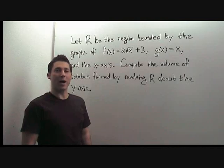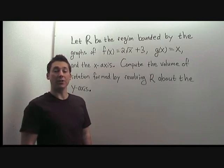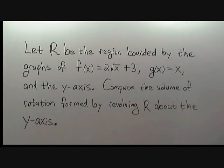This problem is about computing volumes of rotation. Although it's not mandatory, this problem lends itself very well to the cylindrical shell method. Let R be the region bounded by the graphs of f(x) = 2√(x+3), g(x) = x, and the y-axis. Compute the volume of rotation formed by revolving R about the y-axis.